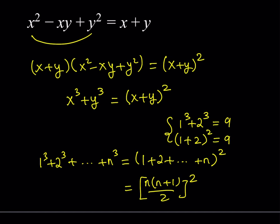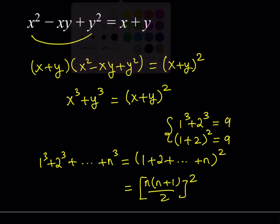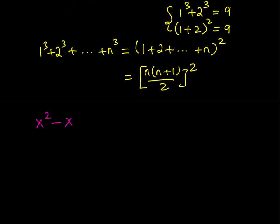Let's put everything on the left-hand side by bringing x plus y to the left. So we have x squared minus xy plus y squared minus x minus y is equal to 0. Now, the plan is to turn this into a sum of squares. If you have a sum of squares equal to 0, every term must equal 0, since a squared term can't be negative. This is a useful algebraic trick. But as it is, this isn't ready to be a sum of squares, so I'd like to first multiply both sides by 2.